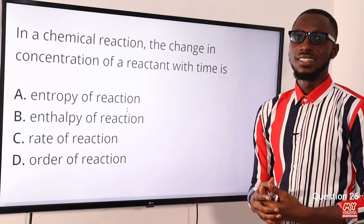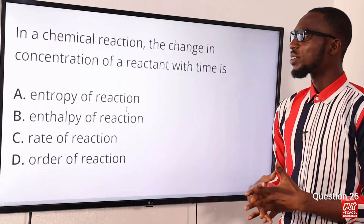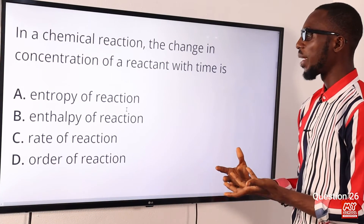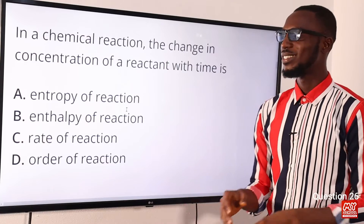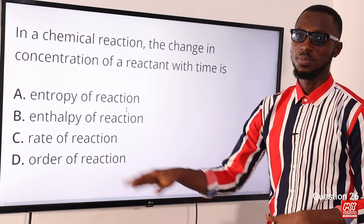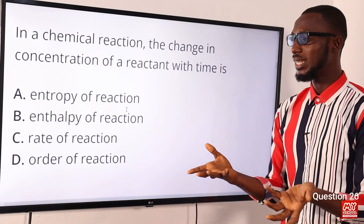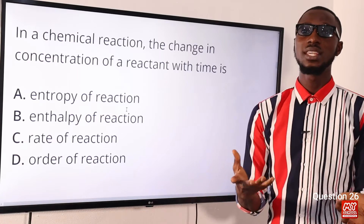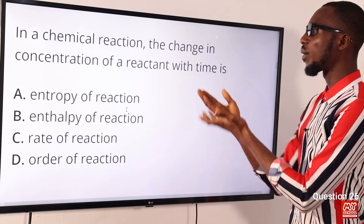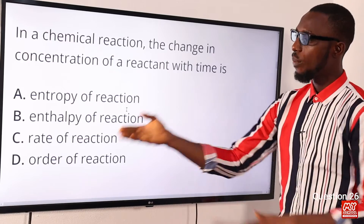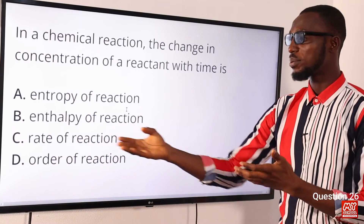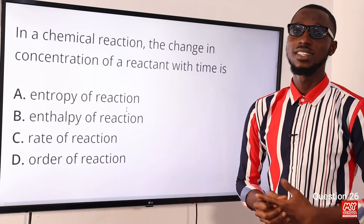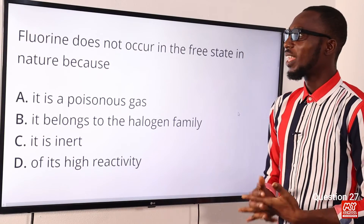Question 26: In a chemical reaction, the change in concentration of a reactant with time — what is this? One of the formulas is: change in concentration of reactants or products over the time taken for the change. When you talk about concentration in relation to time, you're talking about rate of reaction. The correct option is option C: rate of reaction.